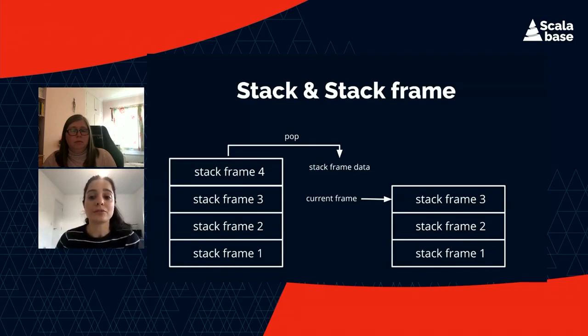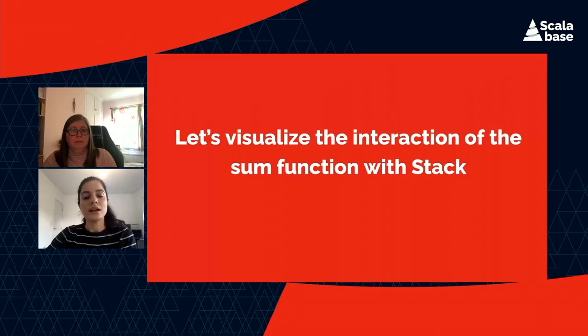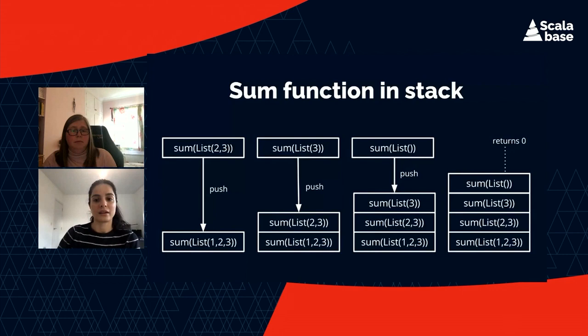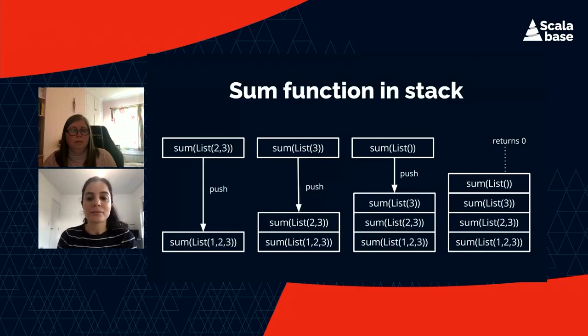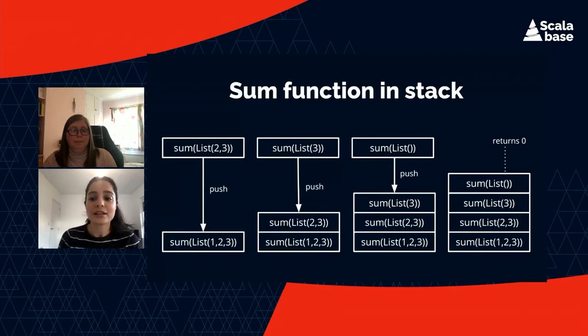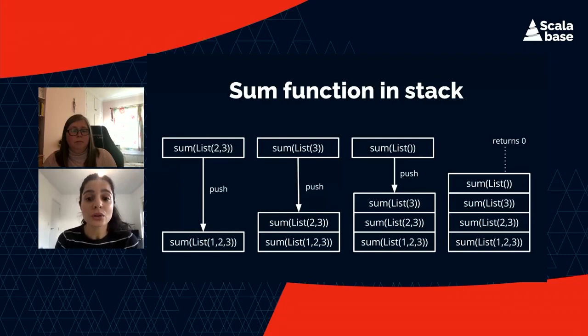As you can see, the frame is popped off the stack and passes back the result of its invocation to the previous frame. Let's visualize the interaction of our sum function with the stack. When sum is invoked with a list of three items — 1, 2, 3 — one stack frame is created and pushed. When it invokes the first recursive call with a list of 2 and 3, another frame is pushed. Then a third frame is pushed for the call with just 3. Finally, for the recursive call with an empty list, the last frame is pushed, because this call meets the base case and returns zero.